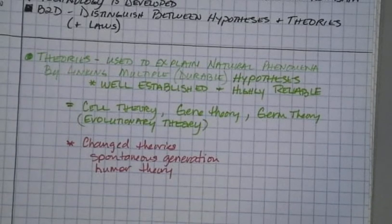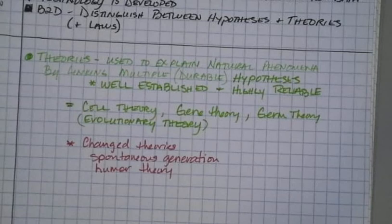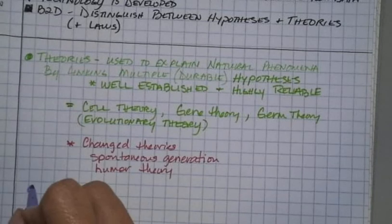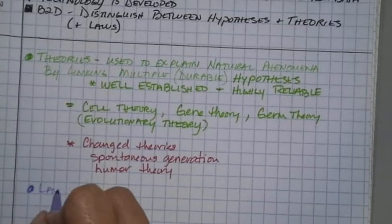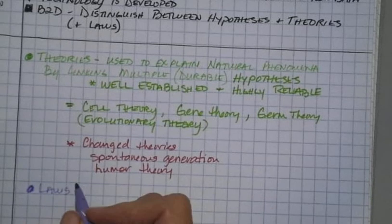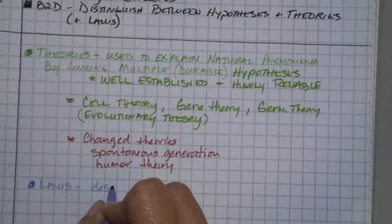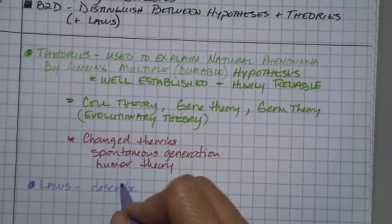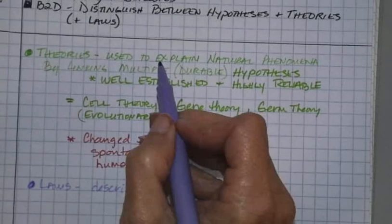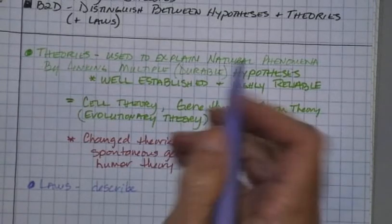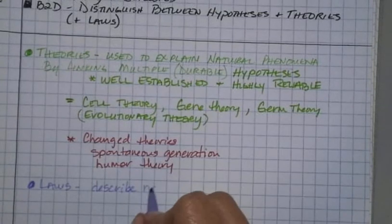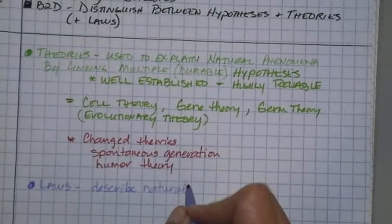laws only describe the natural phenomena. They don't explain it. Laws describe, so look up here. Theories are used to explain the natural phenomena. Laws describe natural phenomena. They don't explain anything. There's a big difference between that.